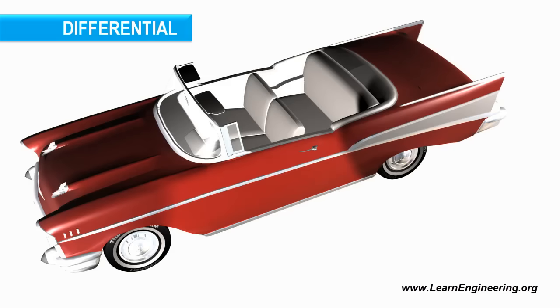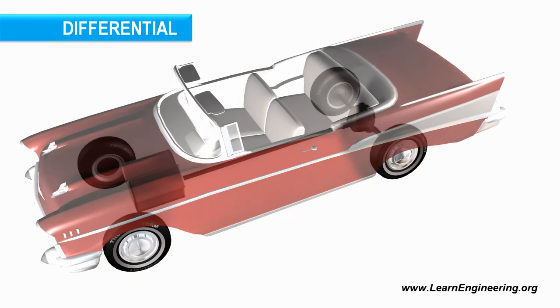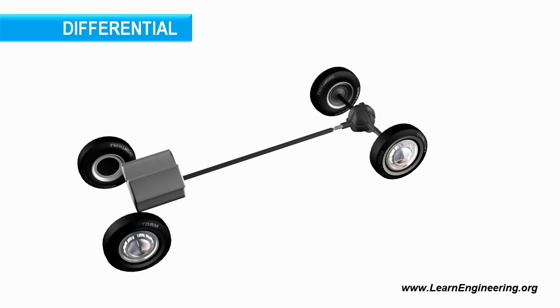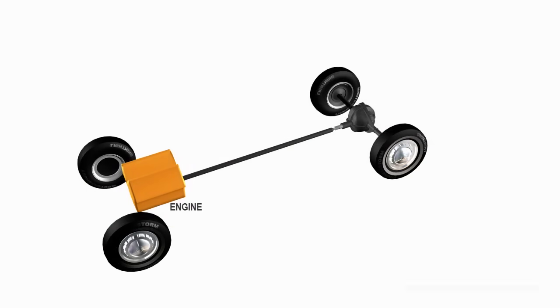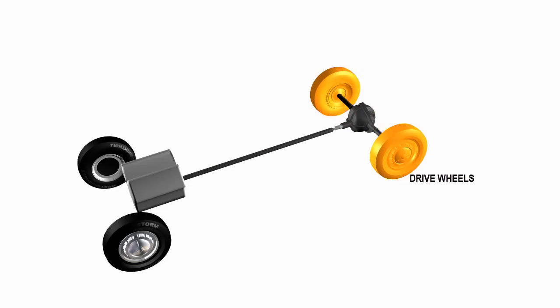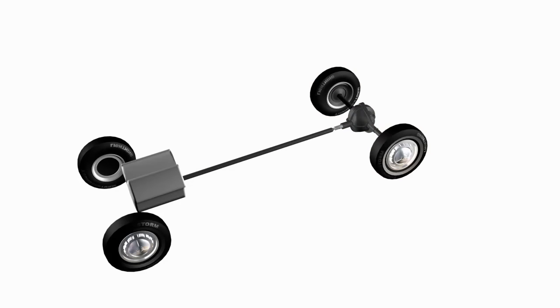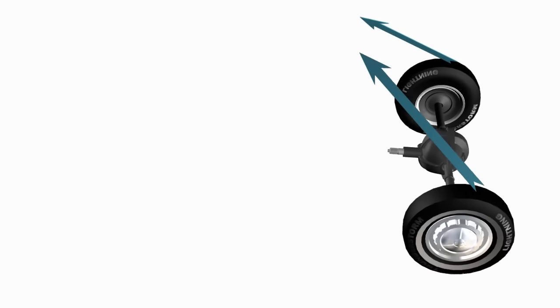Differential is an integral part of all four wheelers. Wheels receive power from the engine via a drive shaft. The main function of the differential is to allow these wheels to turn at different RPM while receiving power from the engine.